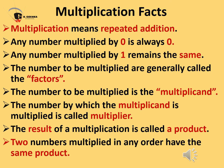Two numbers multiplied in any order have the same product. For example, 2 multiplied by 3 is equal to 6, and 3 multiplied by 2 is also 6.